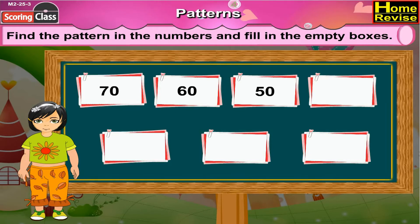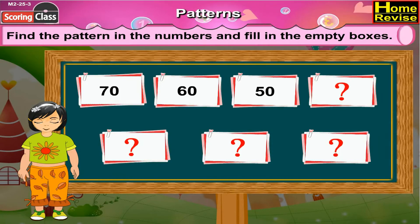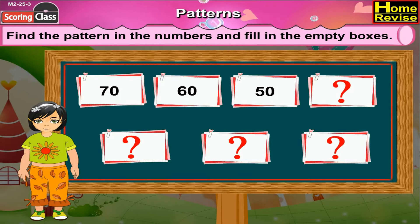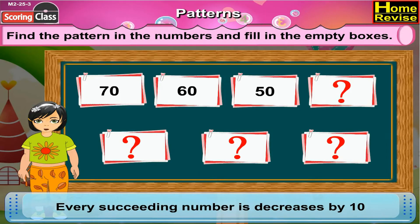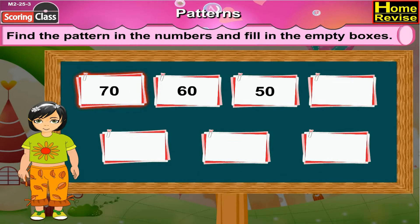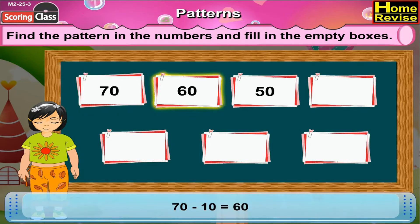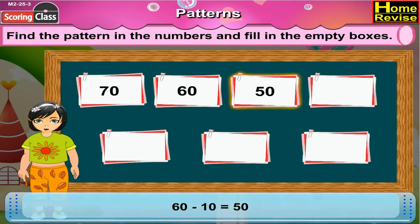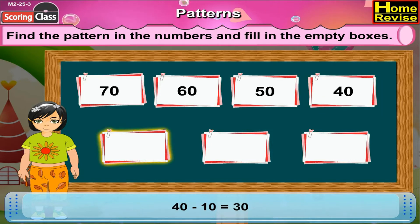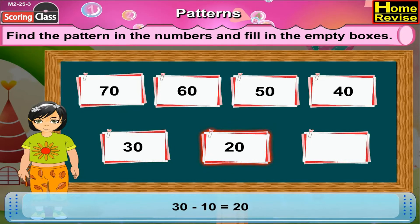Now the next number pattern. You have 70, 60, 50 and 4 empty boxes followed by 6. If you notice it, you will realize every succeeding number is decreased by 10. First number is 70. 70 minus 10 is 60, that is the second number. 60 minus 10, then comes 50. 50 minus 10, the answer would be 40. 40 minus 10, there would be 30. 30 minus 10, 20 will come. And 20 minus 10, 10 will come.